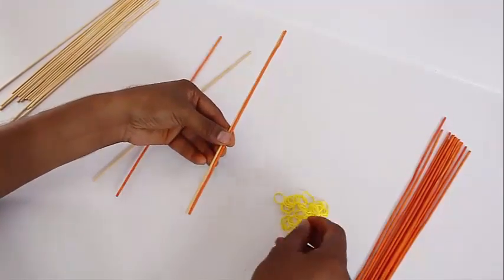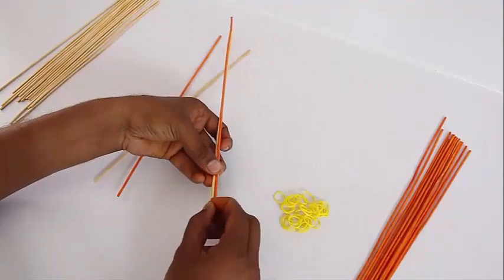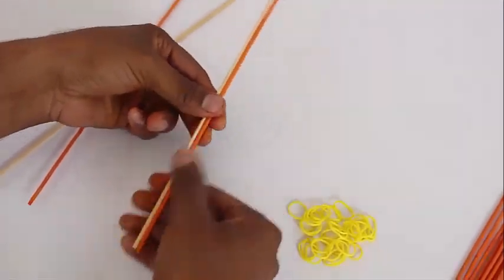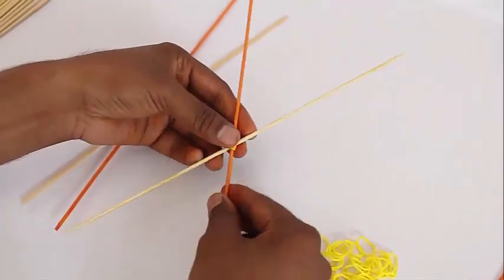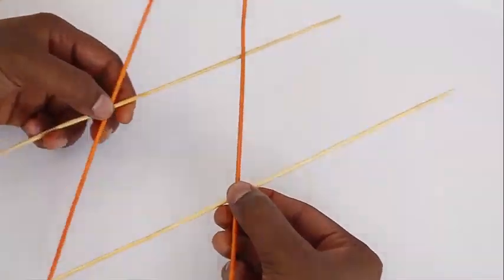Make another pair, put the rubber band in the middle and double it up and once again the red stick should be on the top.